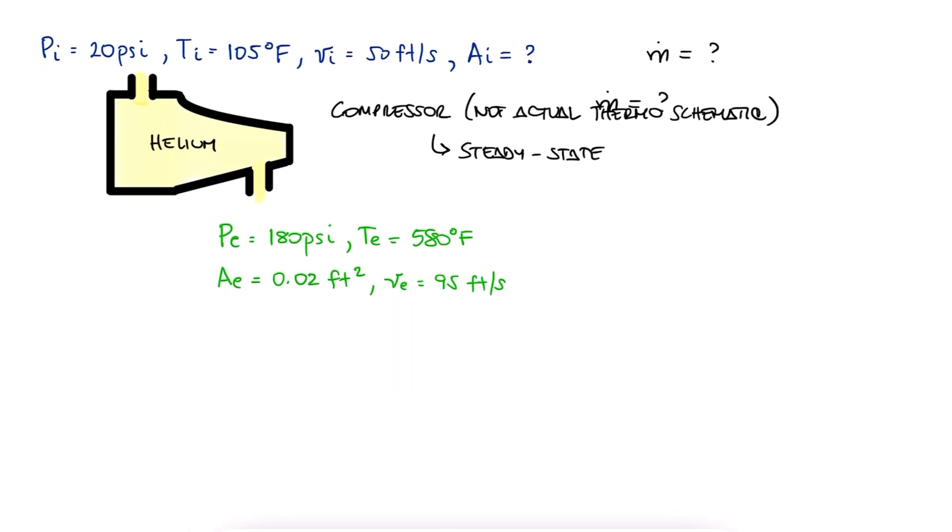During the main lecture video, we wrote the mass flow rate in terms of area, velocity, and specific volume. The area and velocity at the exit are given, so the only term we're missing is the specific volume, also at the exit.